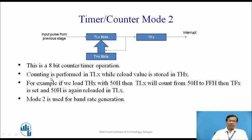Counting is performed in TLX while the reload value is stored in THX. For example, if you load THX with 50H, then TLX will count from 50H upward to FFH, then TFX is generated and 50H is reloaded into TLX. This reloading operation happens after TLX rolls from all 1s to all 0s. This mode is used for baud rate generation.